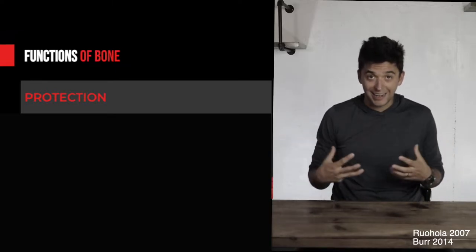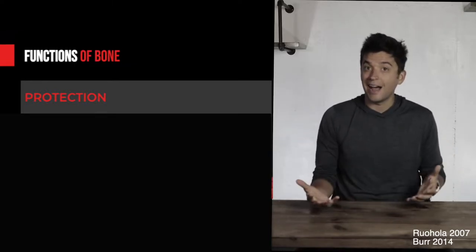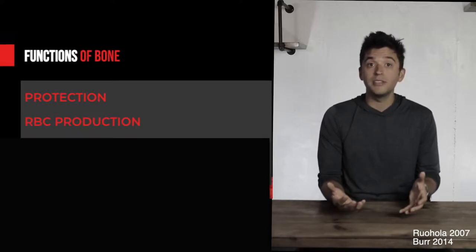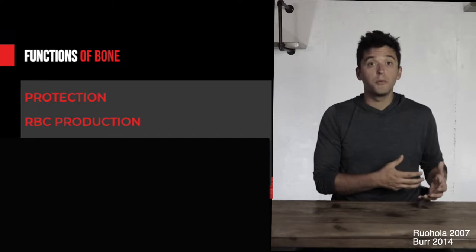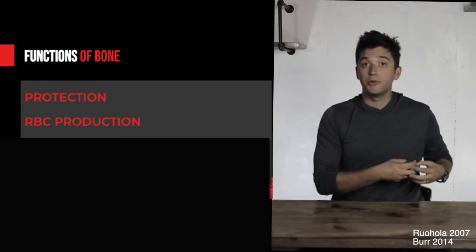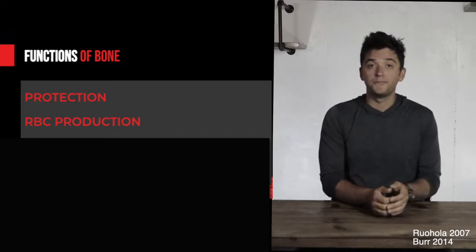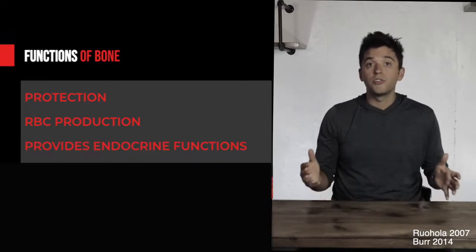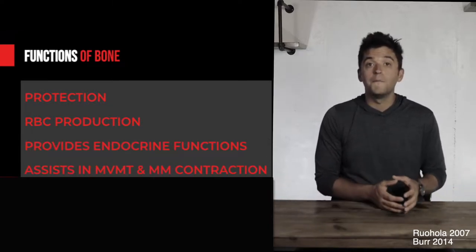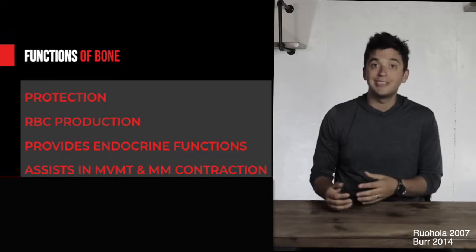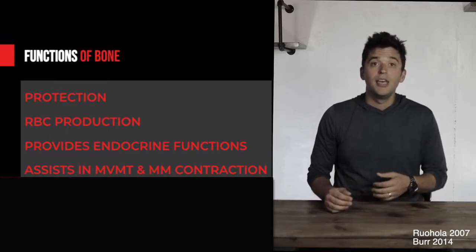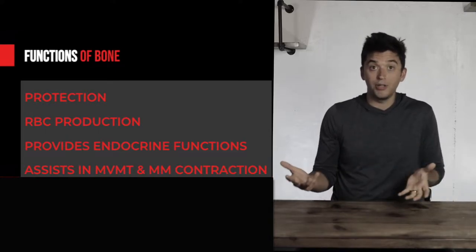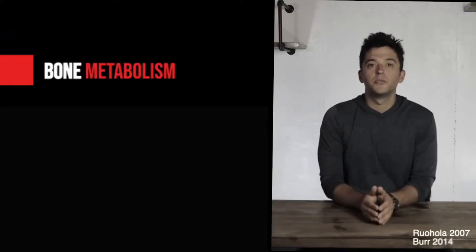We have four main functions of bone. First is protection — the rib cage protects internal organs. Second, red blood cells are produced within our bones. Third, bone provides specific endocrine functions. Fourth, bone enables movement — muscles turn into tendons that attach to bones, and that tugging or contracting of muscle happens because of our bony skeleton.